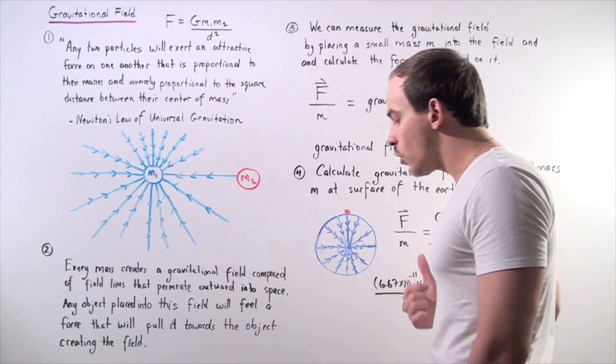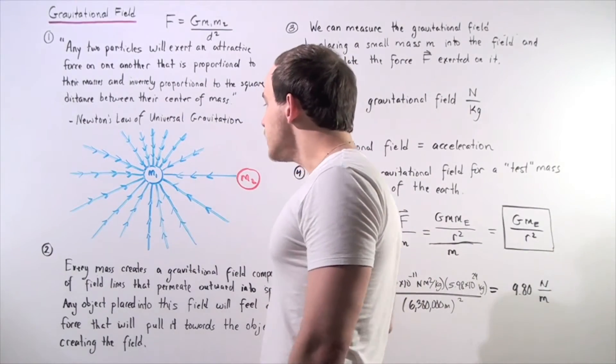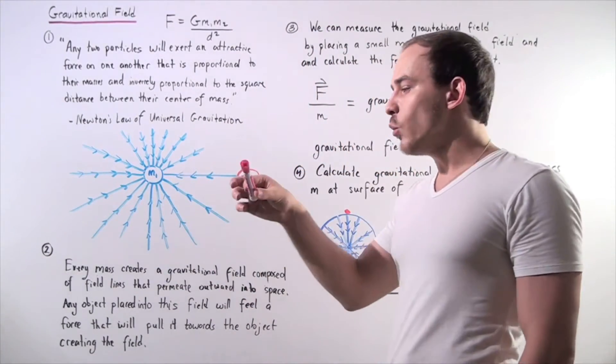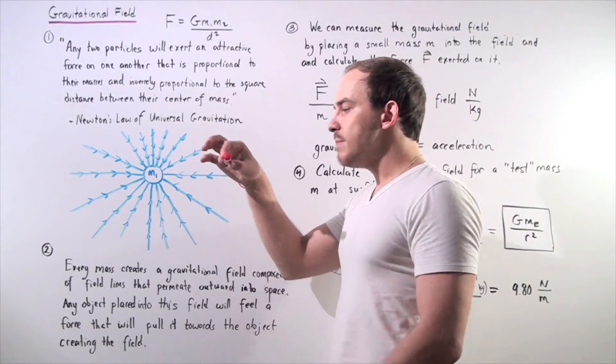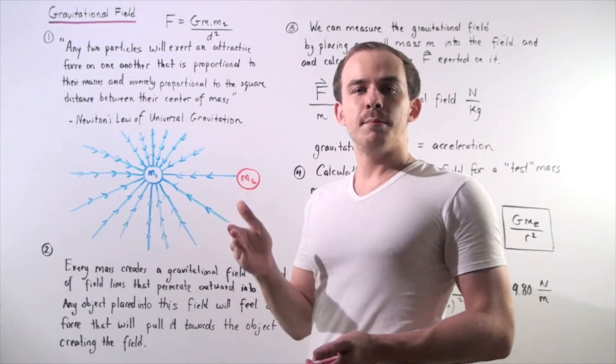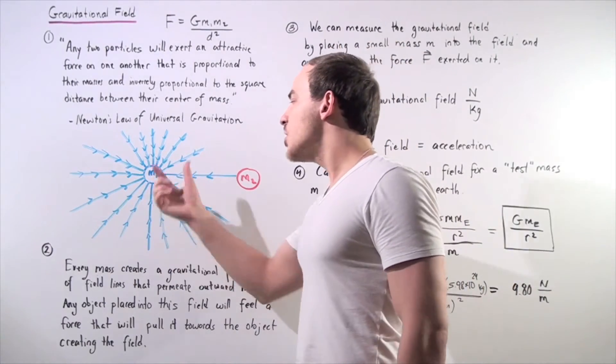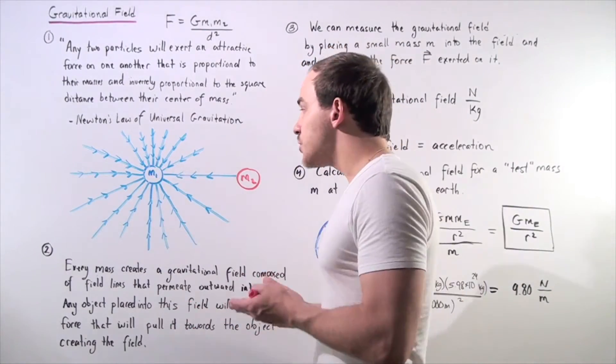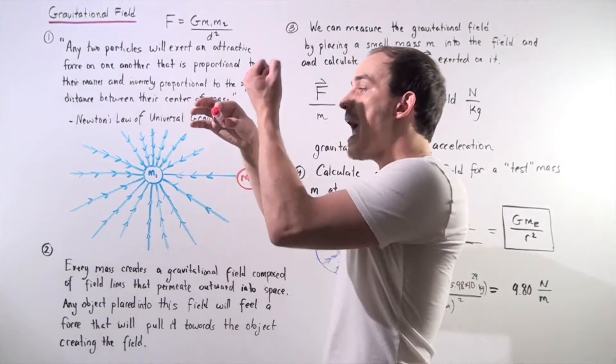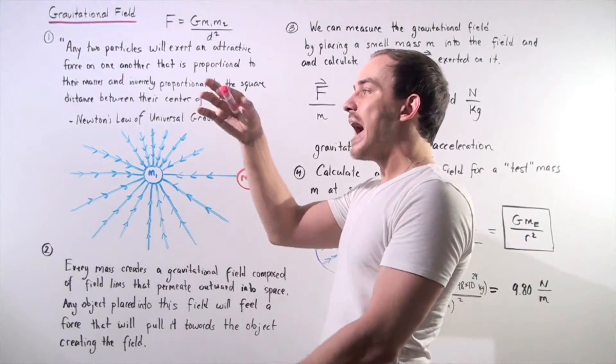Now for example, let's suppose m1 is the earth and m2 is the following marker. So if I keep my marker here and eventually if I let go, what happens to my marker? Well the earth, which has mass one, exerts a force on my mass two, which also has mass, and pulls this object downward.